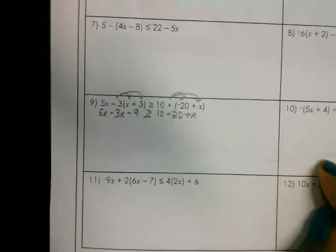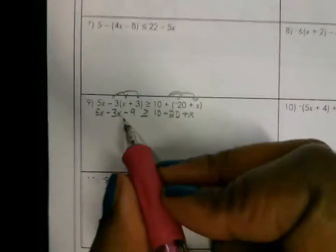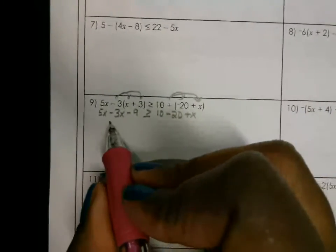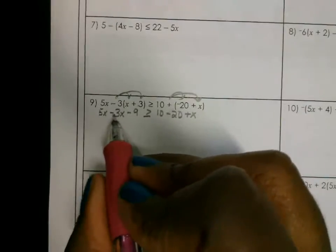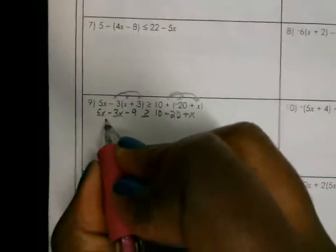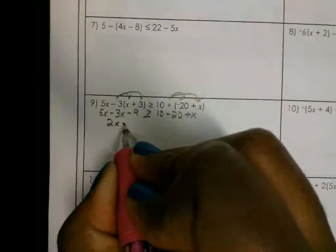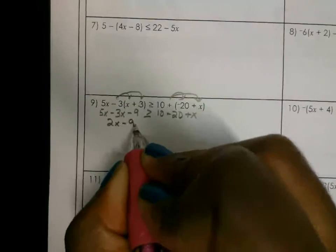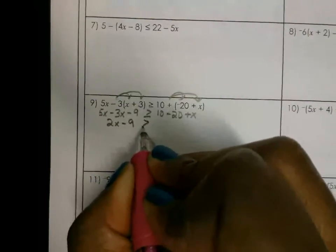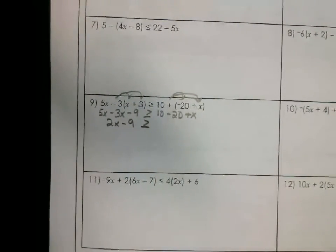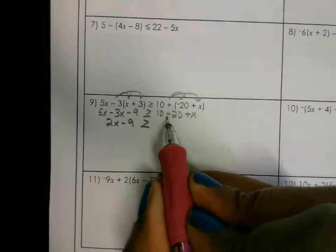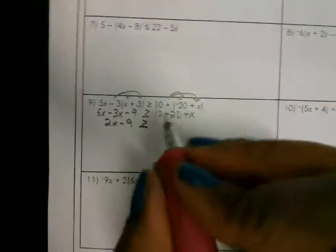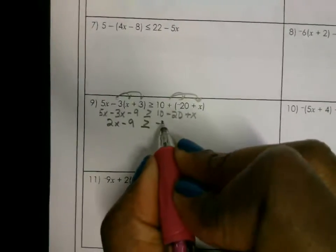Now here we combine like terms. When we combine these two terms, this gives me 2x minus 9. Bring down the greater than or equal to. On this side, we can subtract and combine like terms — that gives us negative 10.